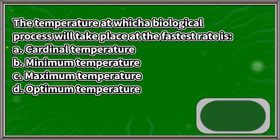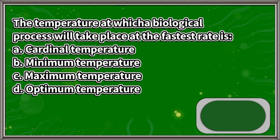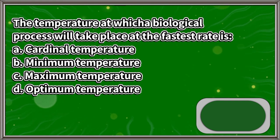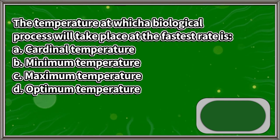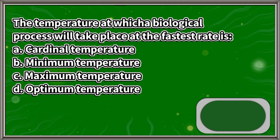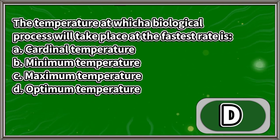The temperature at which a biological process will take place at the fastest rate is: A. Cardinal temperature, B. Minimum temperature, C. Maximum temperature, D. Optimum temperature. The answer is letter D.